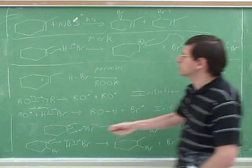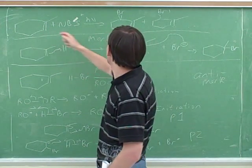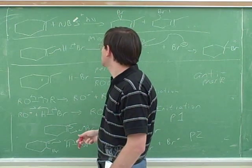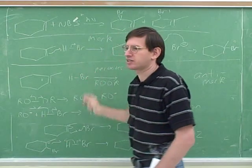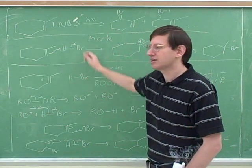So here's three different things that we could do to this halogen. We could do allylic halogenation with NBS. We could do non-radical addition, Markovnikov, or radical addition with peroxides. So you have to watch out for whether there's peroxides or not here.